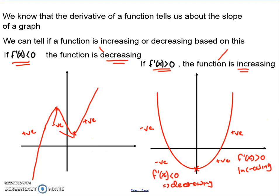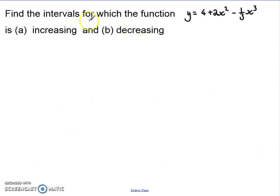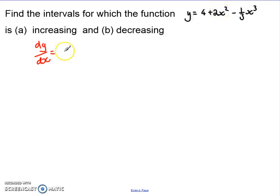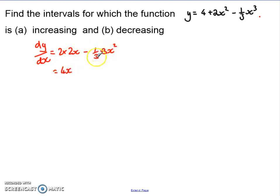Let's see how we can calculate where functions are increasing and decreasing. Imagine I want to find the intervals for which y = 4 + 2x² - (1/3)x³ is increasing for part (a) and decreasing for part (b). We always start with the derivative — we want dy/dx. The derivative of 4 goes. For 2x², we bring the power down and reduce it by 1. For the (1/3)x³ term, keep the 1/3, bring the power down, and reduce. Simplifying: 2 times 2 gives 4x, and 3 times 1/3 gives 1, so we get dy/dx = 4x − x². We can factorise that and get x(4 − x).